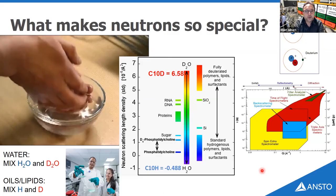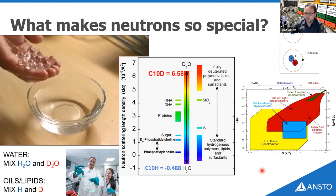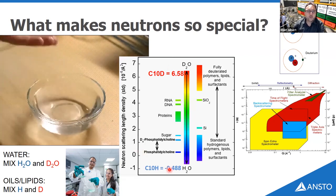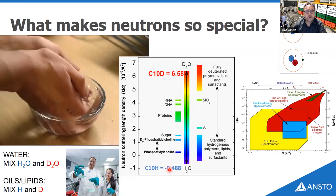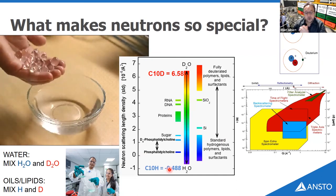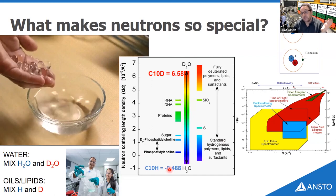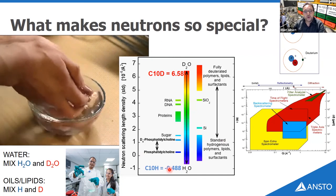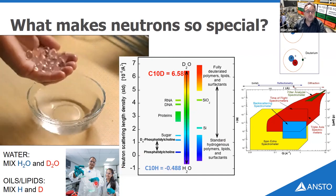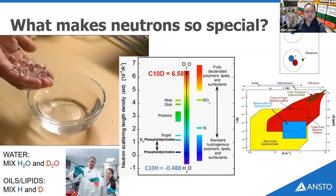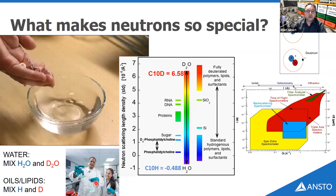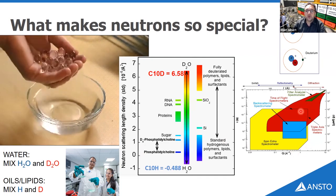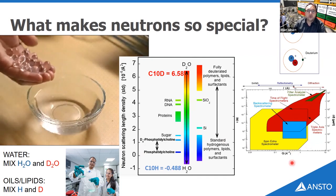What makes neutrons special for looking at food? We can play games of solvent contrast variation, or change hydrogen to deuterium — it doesn't have to be aqueous systems; I'll give an oil-based example. We can also do selective deuteration, like we do at the National Deuteration Facility at ANSTO, and we can observe a whole range of time scales using neutron scattering.